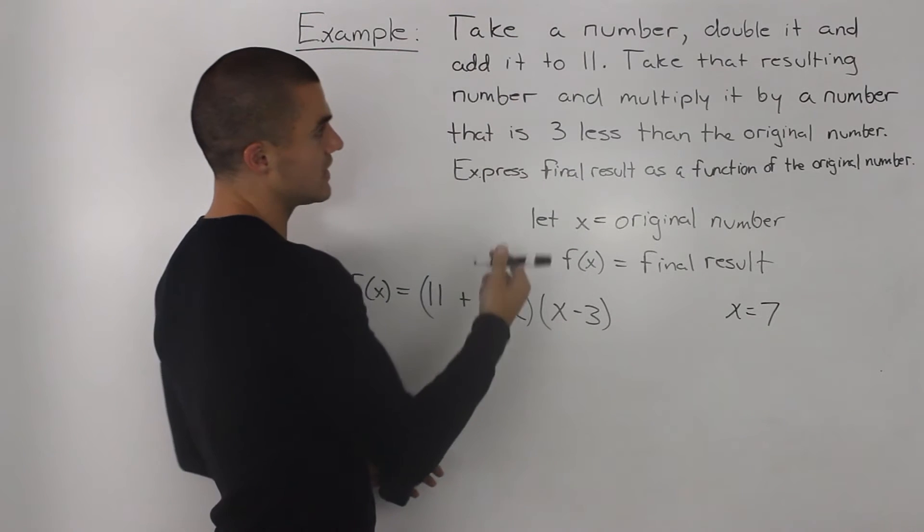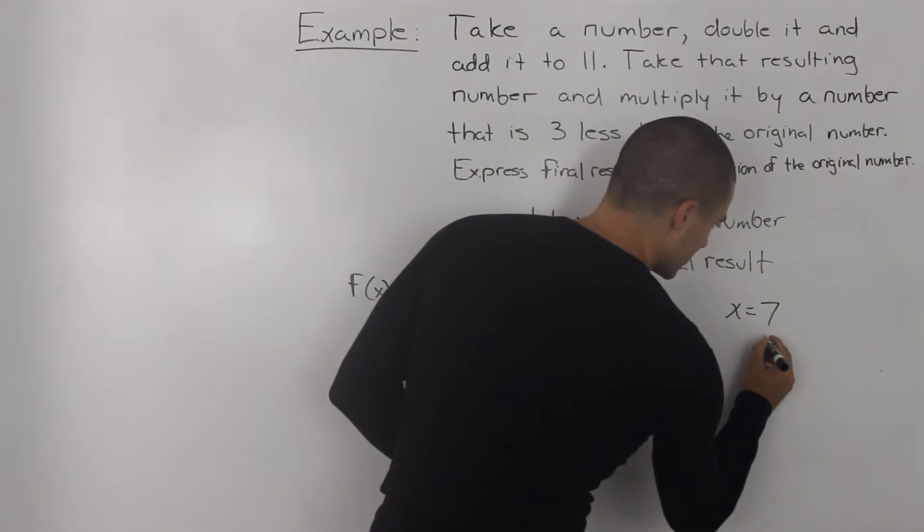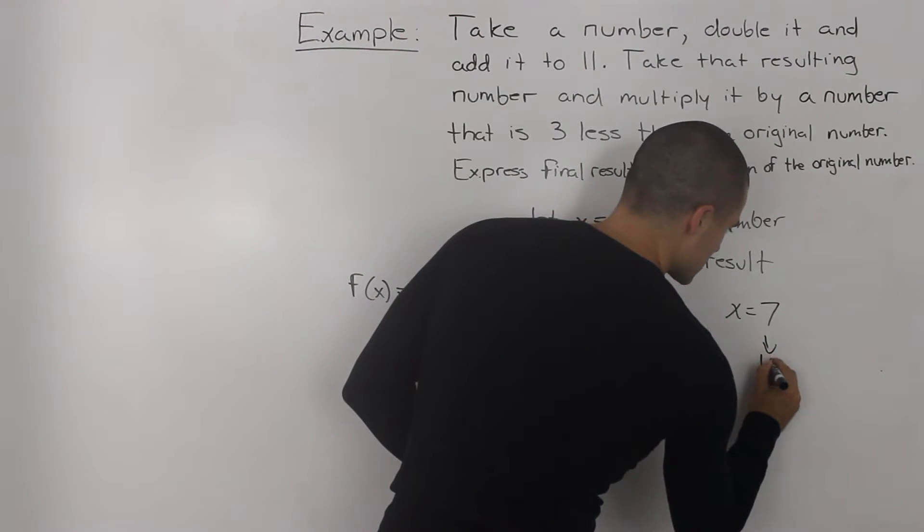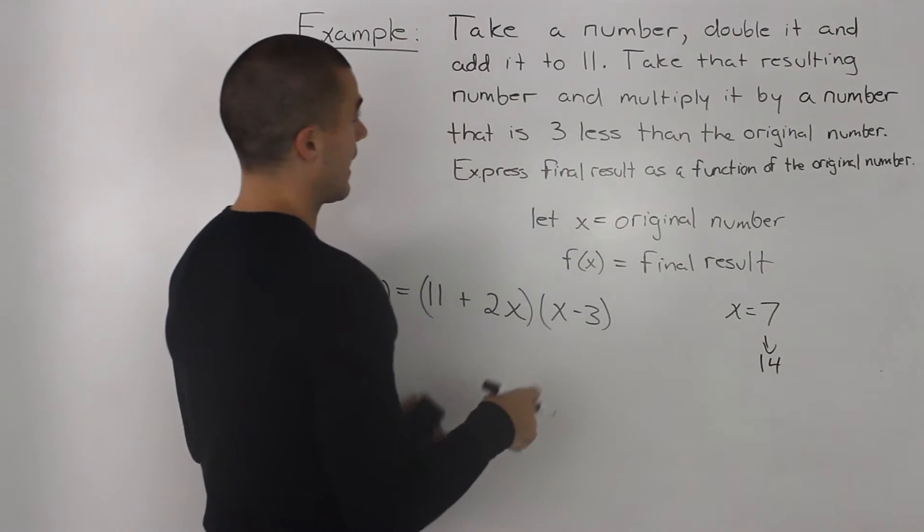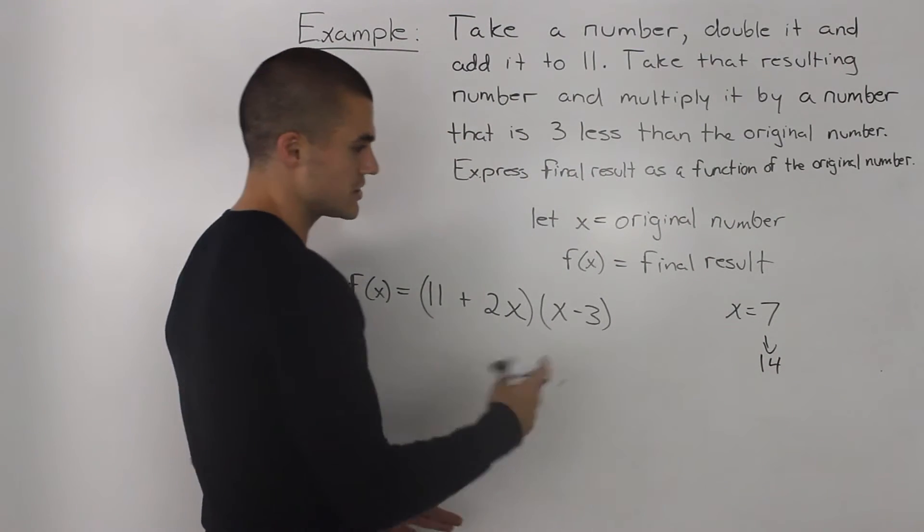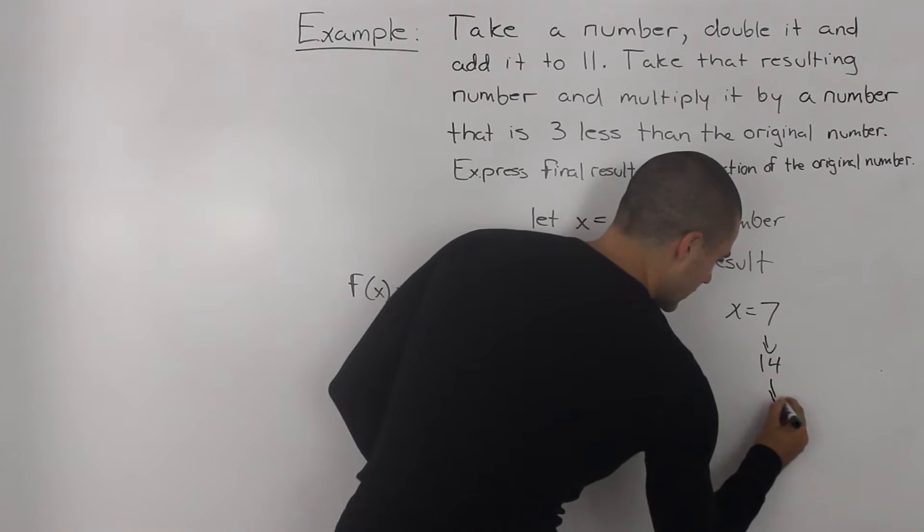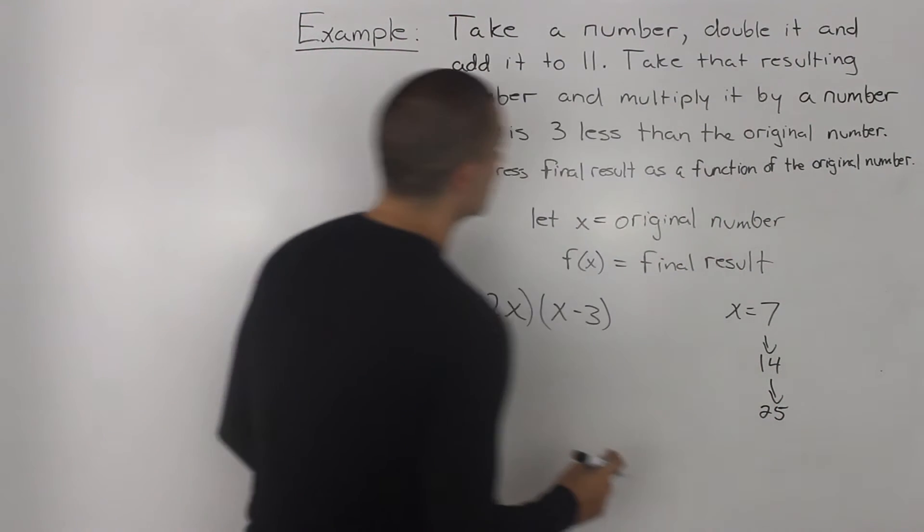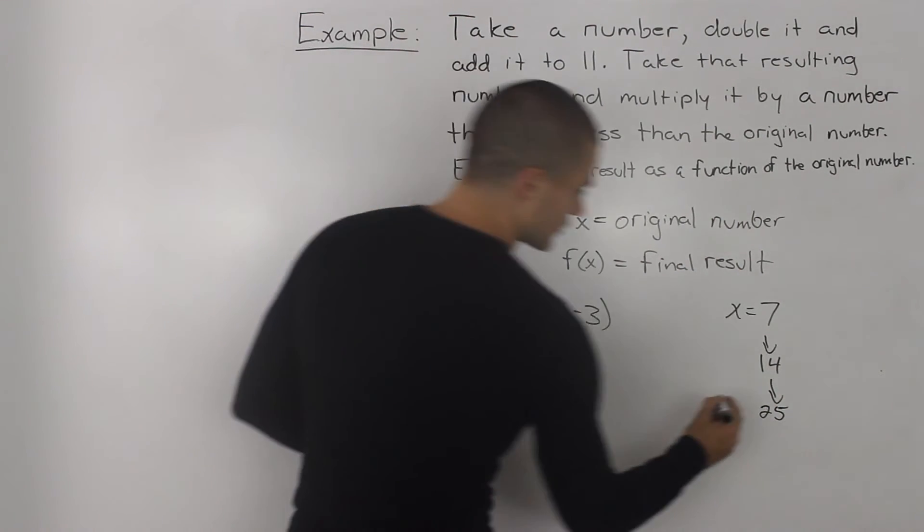So, let's go through the steps. So, we take a number, we double it. So, we double 7. So, that's 14. And then add it to 11. 14 plus 11 gives us 25.